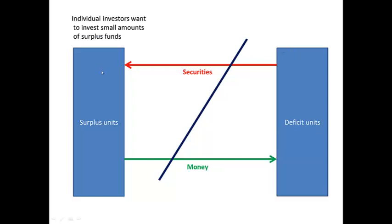The surplus units in the economy may also consist of many individual investors who want to invest small amounts of surplus funds — people who have small amounts of savings which they wish to invest. While the deficit units, such as huge companies, may need substantial amounts. In other words, these funds need to be pooled together in order to finance the deficit of, for instance, a mining company who wants to erect a new mine shaft.